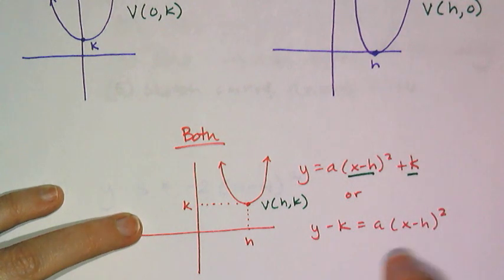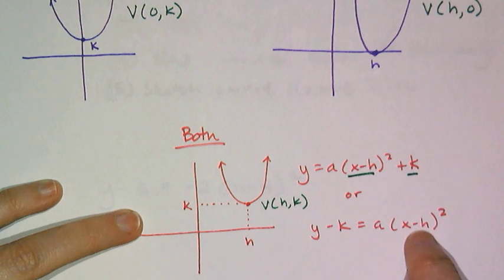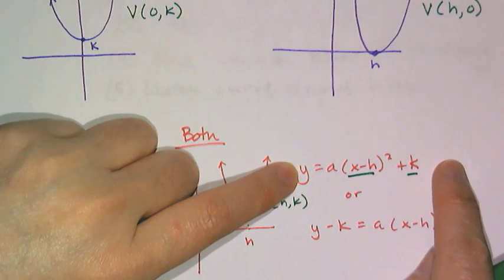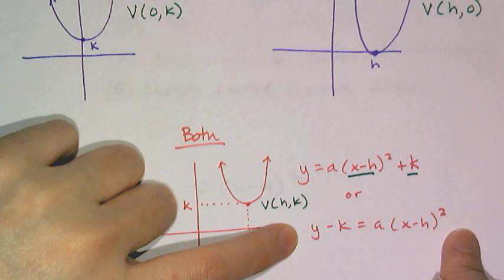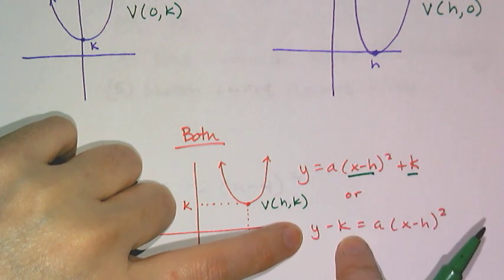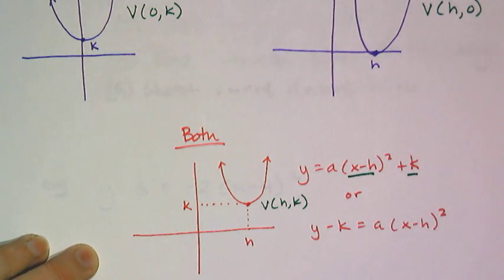Or sometimes you'll see it as y minus k equals a times x minus h quantity squared. Both of them work. This is, of course, calculator ready, meaning you can just type it into y equals on your calculator. And this one is very consistent that it's x minus h and y minus k so that you don't get the signs confused. And that's all vertex form really is. It's just taking y equals x squared and moving it around the plane.